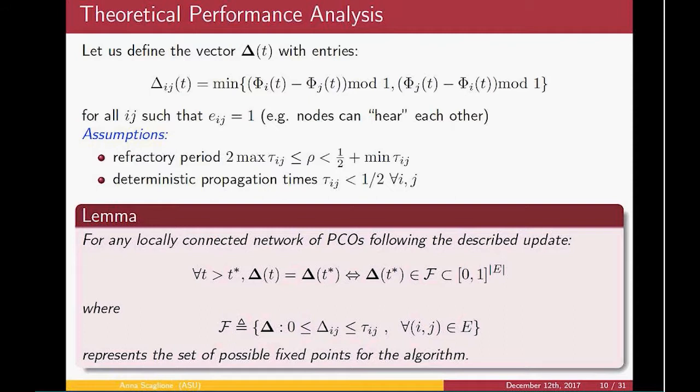Under these assumptions we were able to prove that the only possible stable fixed points for the PCO protocol are characterized by this vector Δ(t) falling in this particular region. Very importantly, you have an entire region and not necessarily only isolated fixed points that are possible convergence points for the algorithm. This region is characterized by the fact that all the entries of this vector have to be between zero and the maximum delay.